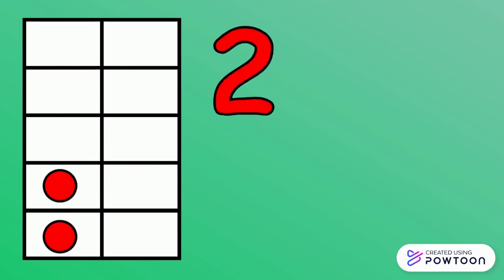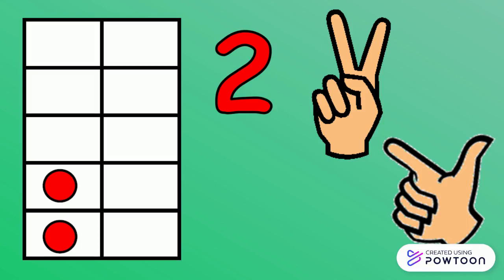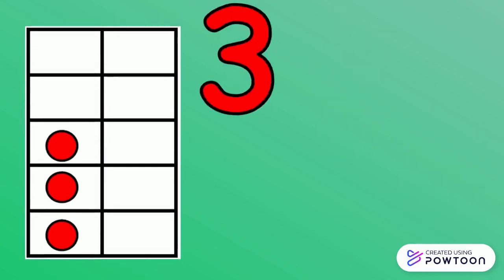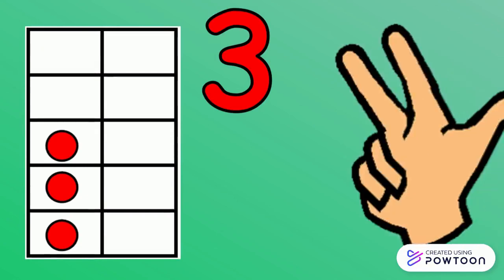We have two red circles. The number is 2. There are three red circles. The number is 3.